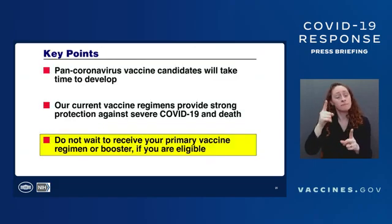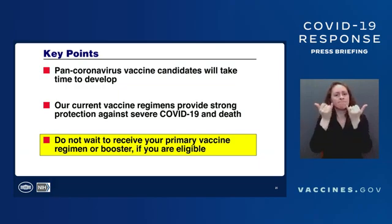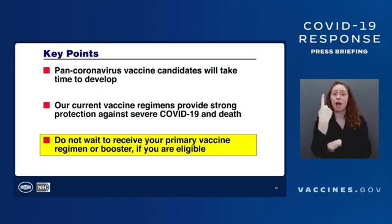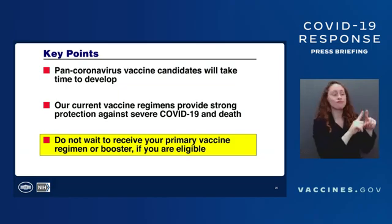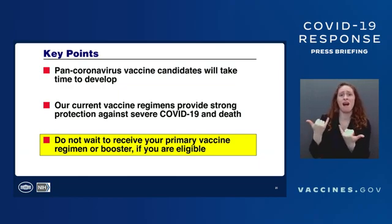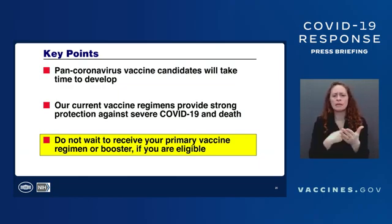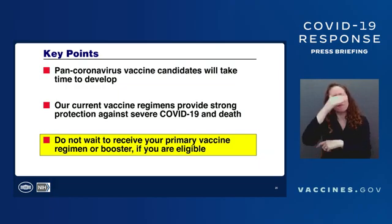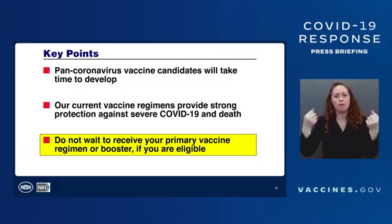Some key points: I don't want anyone to think that pan-coronavirus vaccines are literally around the corner in a month or two — it's going to take years to develop in an incremental fashion. Some of these are already in phase one clinical trials. However, our current vaccine regimens do provide strong protection, particularly when used with a booster, against severe coronavirus disease and death. So do not wait to receive your primary vaccine regimen, and if you are vaccinated, please get your booster if you are eligible.